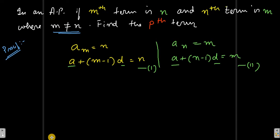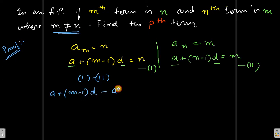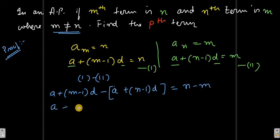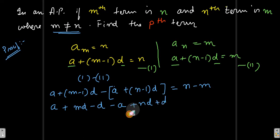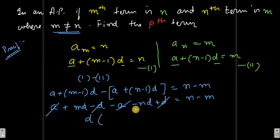Now we will subtract — equation one minus equation two. So we get: a plus (m minus 1) into d, minus a plus (n minus 1) into d, equals n minus m. Simplifying, the a terms cancel out, and we get d times (m minus n) equals n minus m.